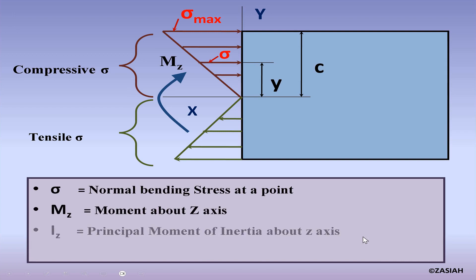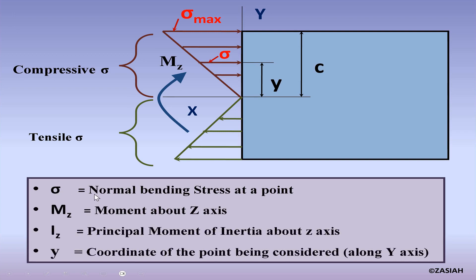Here the variables are defined in detail: σ indicates the normal bending stress at a point; Mz is the moment about the z-axis; Iz is the principal moment of inertia about the z-axis, which is a sectional property; and y is the coordinate of the point being considered along the y-axis.